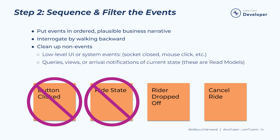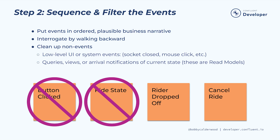Another common non-event is a query, view, or notification of current state. We'll almost always capture these as read models. One exception might be a business-driven snapshot event that captures a moment in time, such as a monthly closing of the books in banking. Finally, most requests from users to change the state of the system are in fact commands and not events, especially if we can immediately decide what to do about that request. So, as we step through the model to check the narrative, we can also remove non-events or replace them with a placeholder green read model sticky or a blue command sticky.